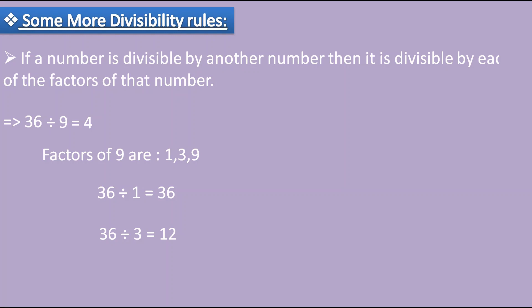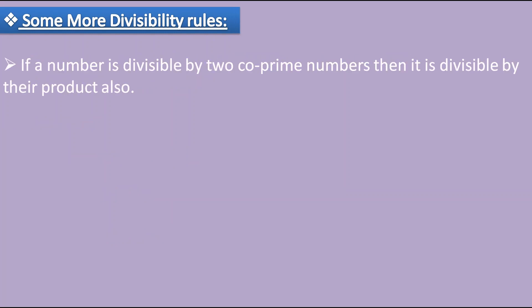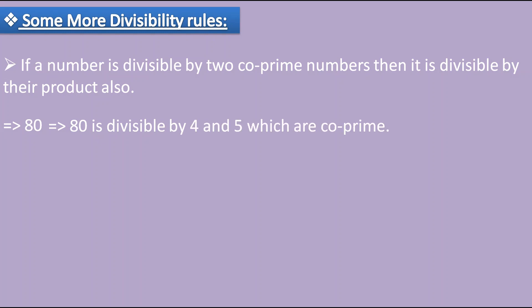Rule 2: if a number is divisible by two co-prime numbers, then it is also divisible by their product. For example, 80 is divisible by 4 and 5, which are co-prime numbers. The product of 4 and 5 is 20, and indeed 80 divided by 20 gives 4 with remainder 0, so 80 is divisible by 20.